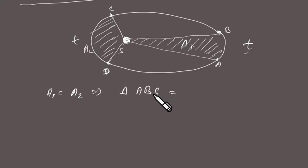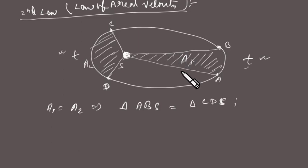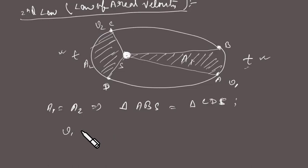The second law states that A1 equals A2 — that is, the area of triangle ABS equals the area of triangle CDS — provided the time interval for both sections is exactly equal. This law also states that the velocity of the planet when it is nearer to the Sun is greater than its velocity when it is farther from the Sun.